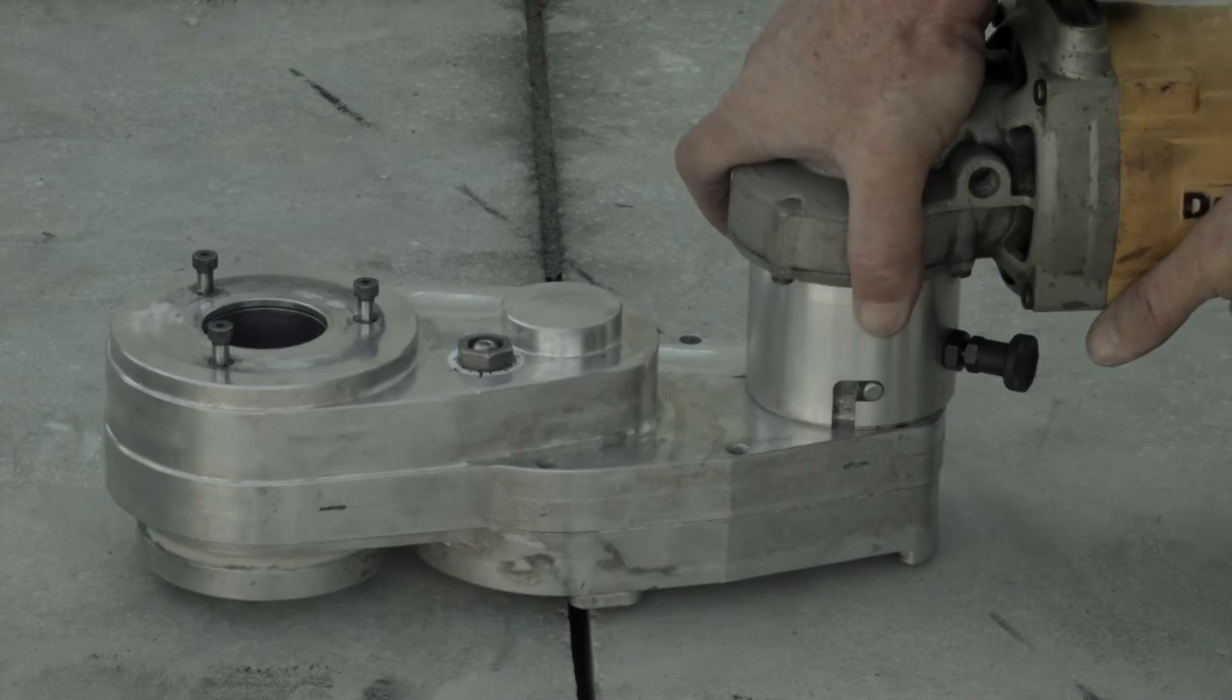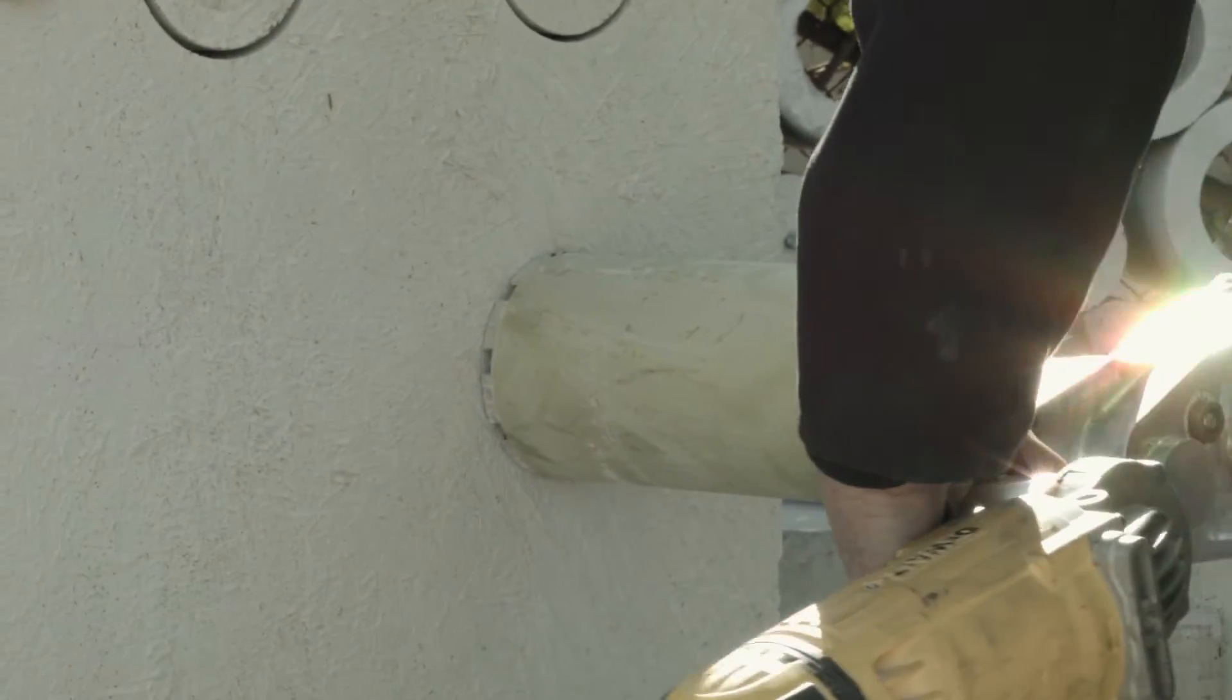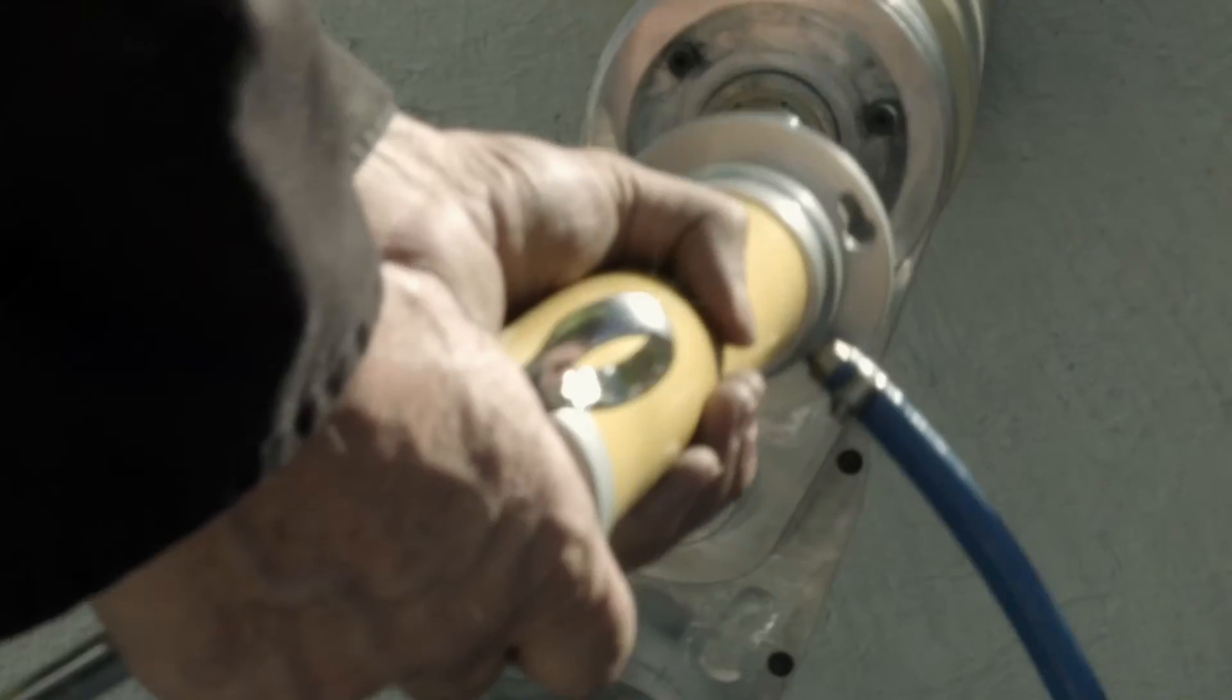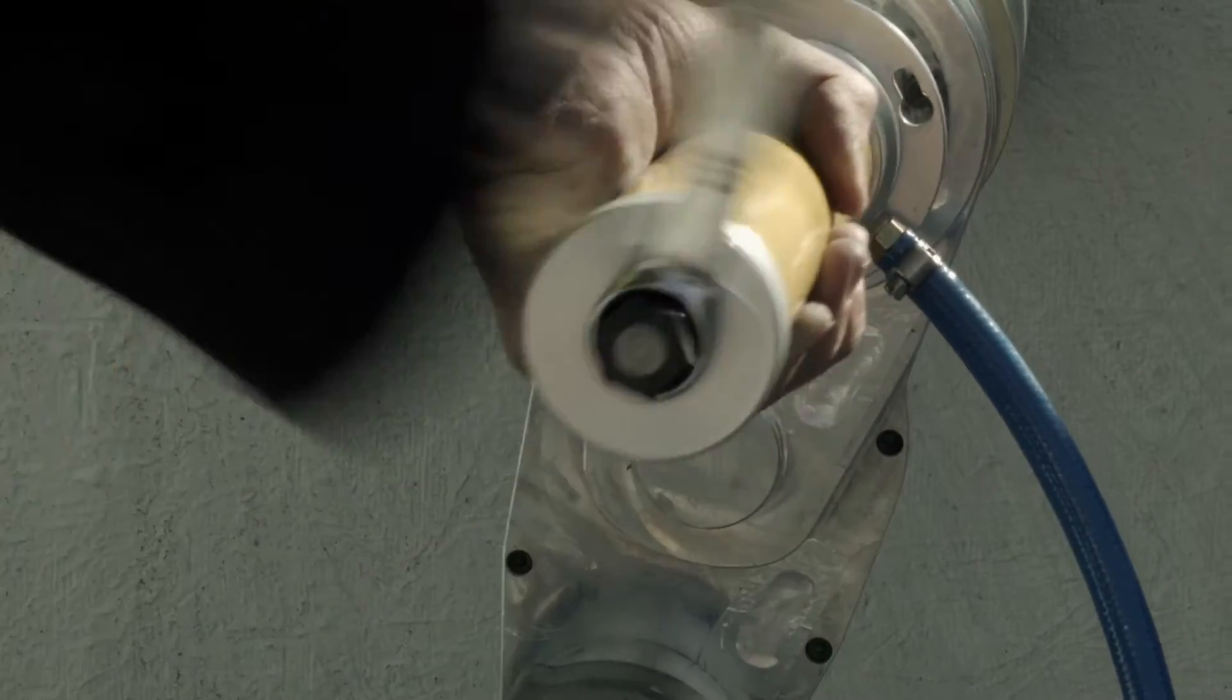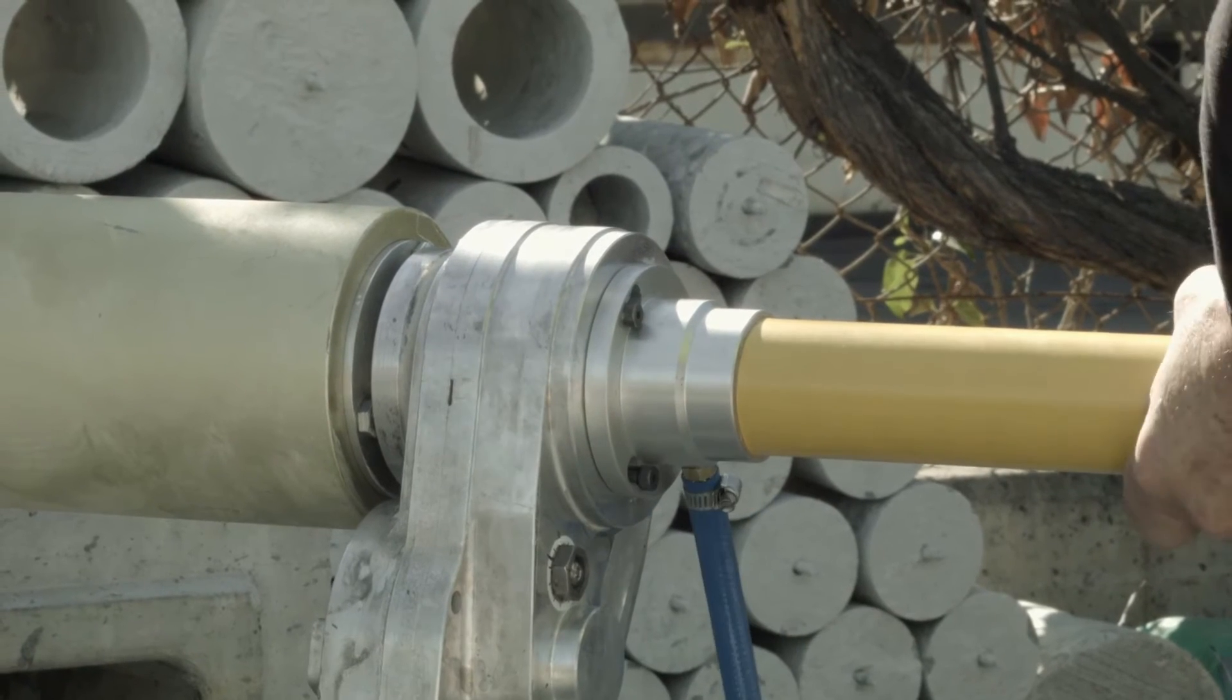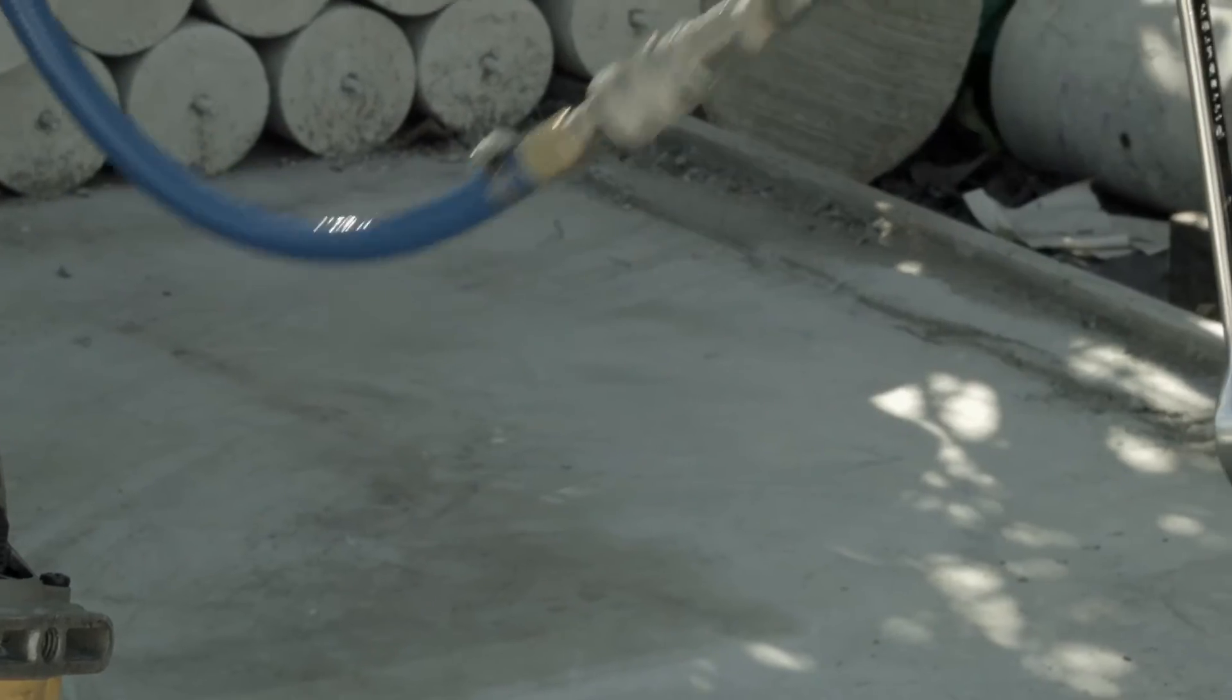Assemble the grinder motor to the CoreEasy gearbox and slide onto the core bit. Depress the locking pin to secure the system together. Assemble the water feed tube to the back of the gearbox. Turn on the water supply. We are now ready to drill.